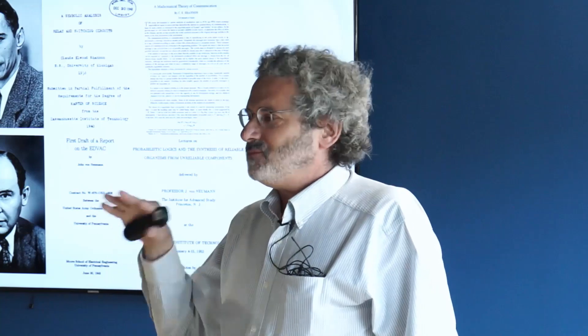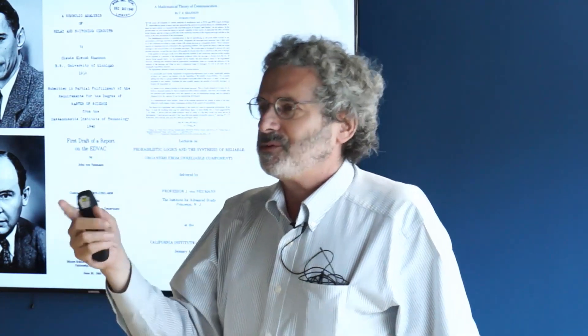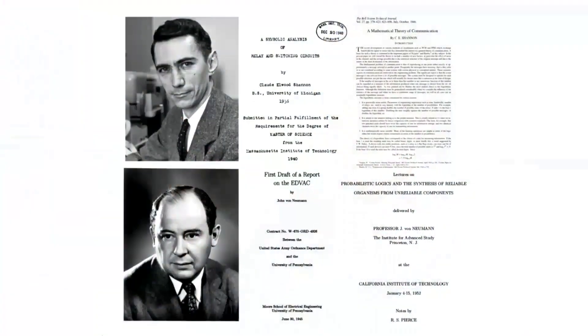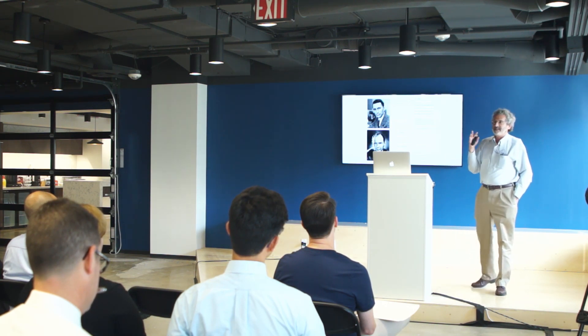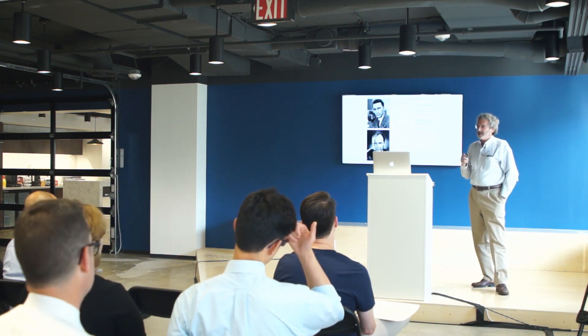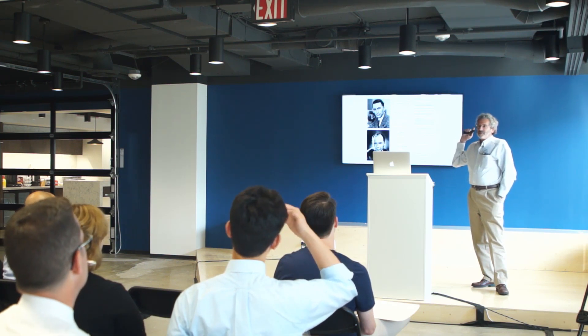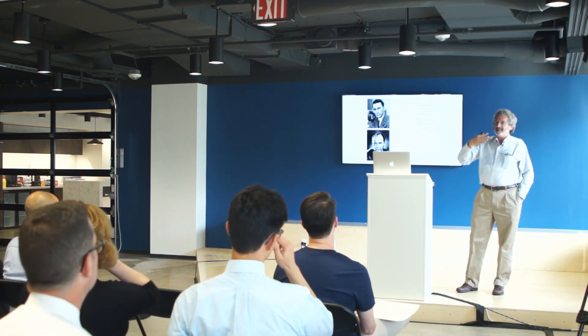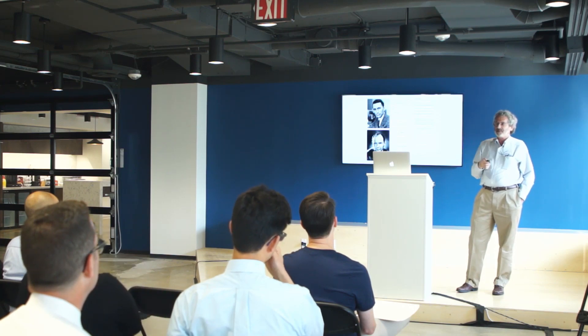John von Neumann gave us modern computer architecture through the EDVAC report, which was a historical accident. But he was very influenced by Shannon. And so he applied Shannon to computation to show you could make a reliable computer out of unreliable devices by viewing the computation as a communication, again, with this threshold behavior of exponential scaling, which in turn was the root of how to make quantum computers. So these are both about how restoring state gives you this exponential scaling that's the real meaning of digital.